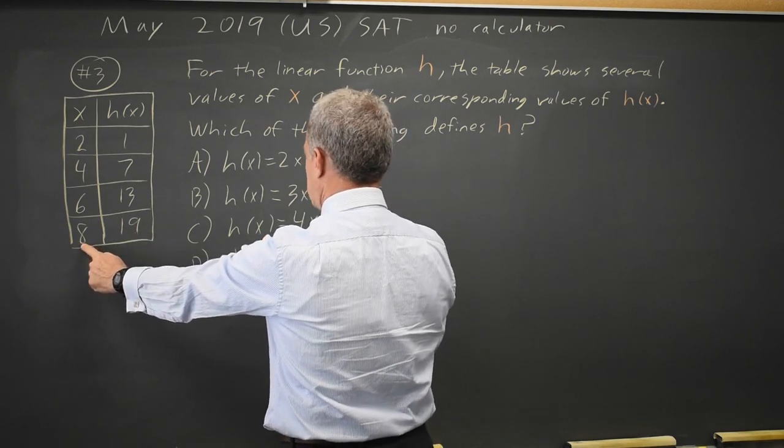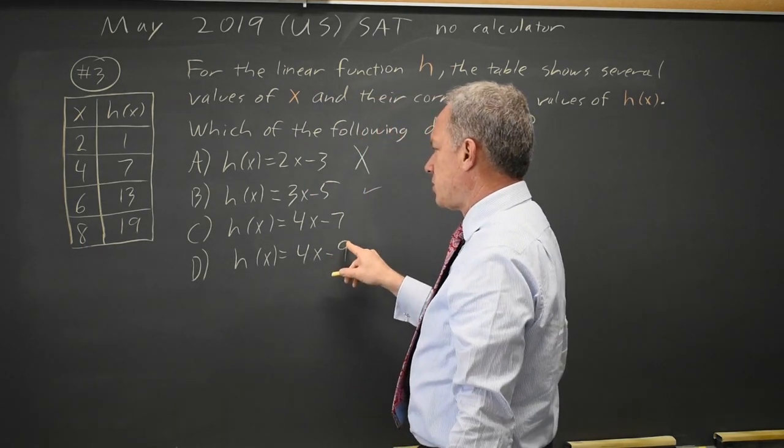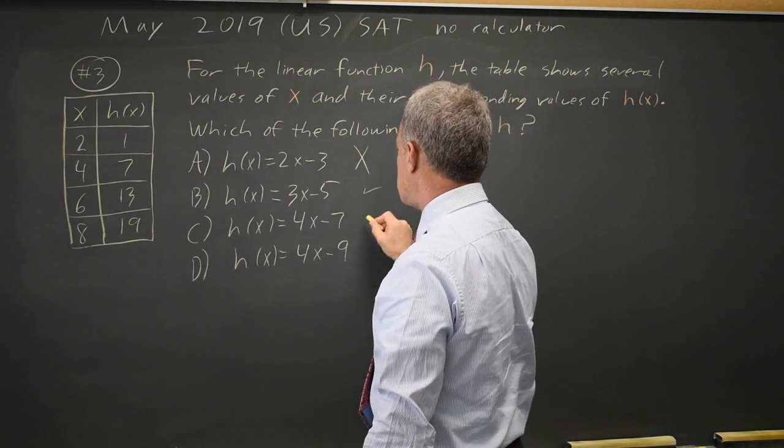4 times 8 is 32. 32 minus 7 is 25, which is not 19, so choice C is wrong.